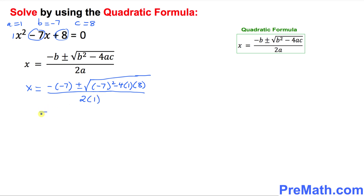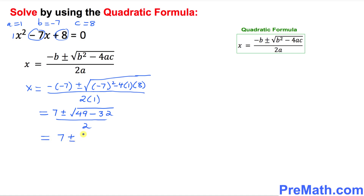Let's simplify. Negative and negative become positive 7, plus or minus the square root of — negative 7 squared is 49, minus 32 — all divided by 2. That turns out to be 7 plus or minus the square root of 17, all divided by 2.